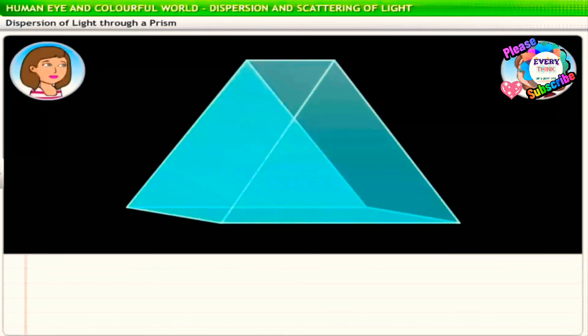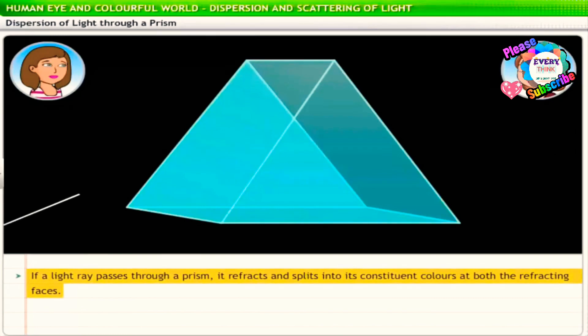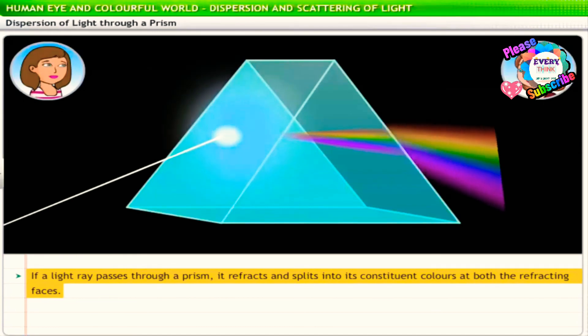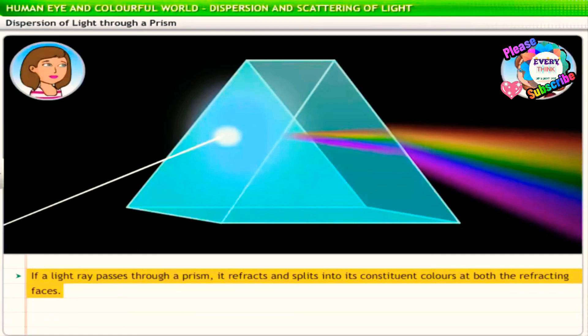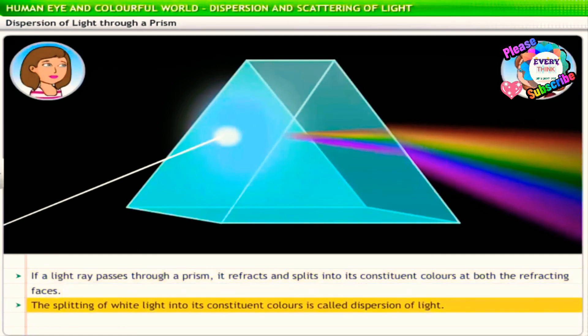You'd be surprised to know that these are all constituents of white light. When a white light ray passes through a prism, it refracts and splits into its constituent colors in the process of refracting through the prism. The splitting of white light into its constituent colors is called dispersion of light.